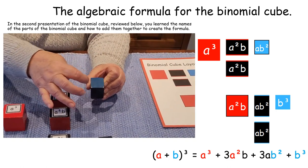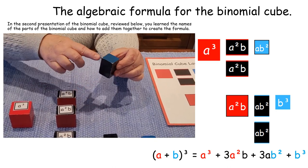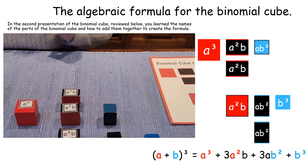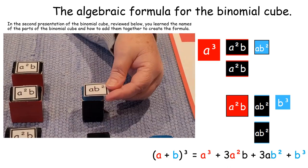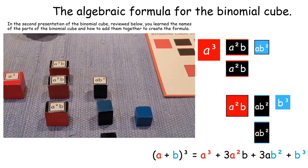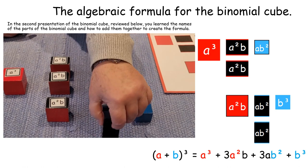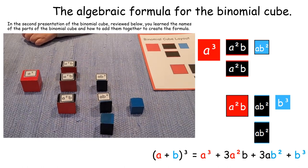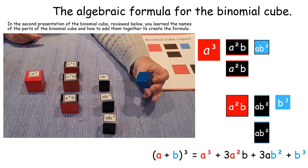This piece is B squared A. We don't say B squared A, we say A B squared. This one is also A B squared, and this one is also A B squared.